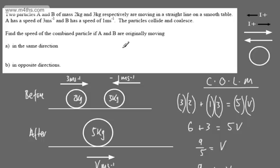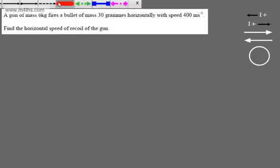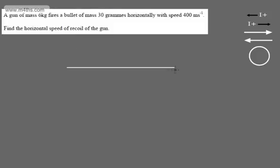So two fairly straightforward questions on conservation of linear momentum. In the exams, often they're more involved, and in later videos we will look at those. Let's have a go at another one. A gun of mass 6 kilograms fires a bullet of mass 30 grams horizontally with a speed of 400 metres per second. We're asked to find the horizontal speed of the recoil of the gun. Initially this doesn't look much like a conservation of momentum problem, but once you've done a few of these, they're fairly straightforward.